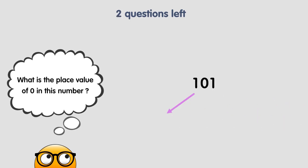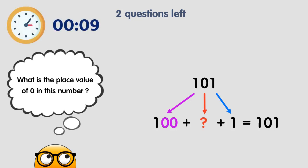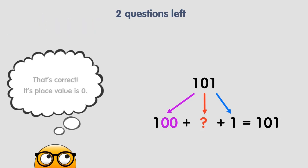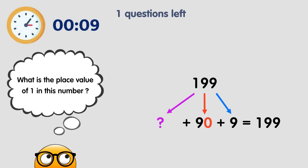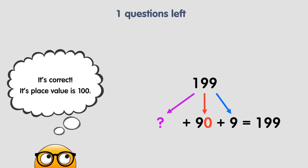What is the place value of 0 in this number? That's correct — the 0 has a place value of 0. What is the place value of 1 in this number? It's correct — the 1 has a place value of 100.